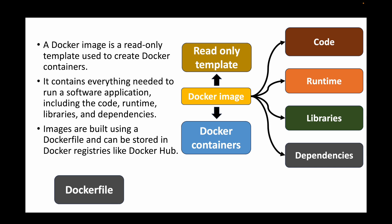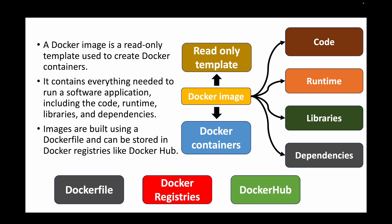These images are built using a Dockerfile, which is a text file containing all your instructions. When you want to build a Docker image, you make use of your Dockerfile. You can then store these Docker images in a Docker registry like Docker Hub. If you want to share images with other users in your team, you put them in a common, shareable location — which is your Docker registry, for example Docker Hub.